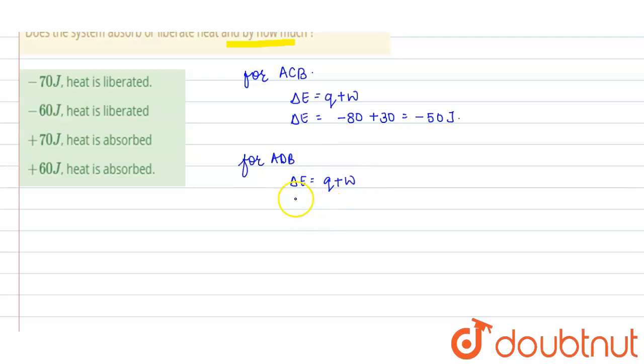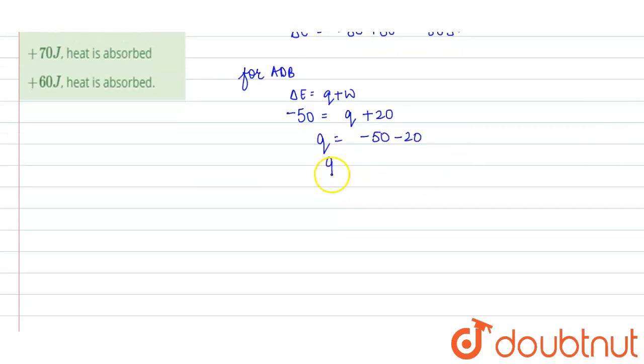So here it will be equals to Q minus 50 is equals to Q, which we need to calculate, plus 20. So Q will be equals to minus 50 minus 20. Q will be equals to